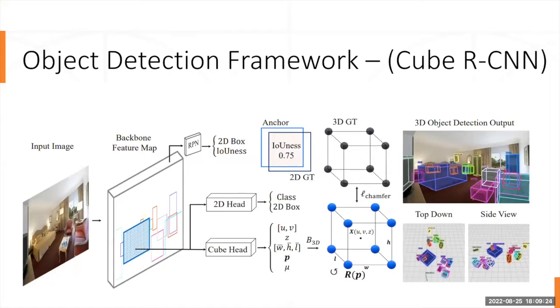This is the Cube R-CNN framework. Let me explain how this works. First, we give an image as input and this will be taken into the CNN framework. Cube R-CNN has three important steps: RPN, 2D head, and 3D cube head.